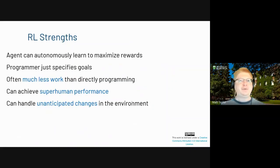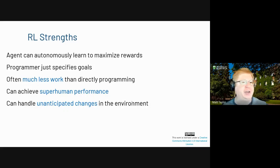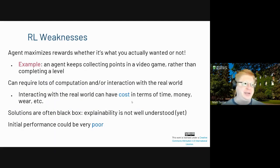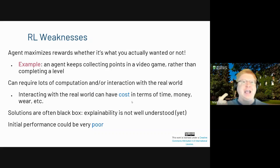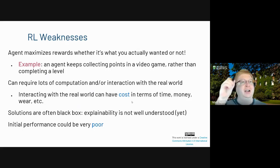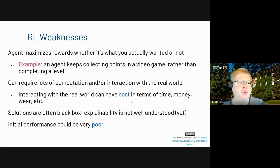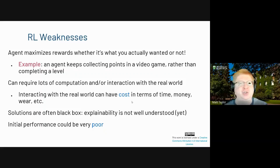Summing up: reinforcement learning can help an agent learn to maximize rewards — the programmer just has to specify goals. There's often much less work than hand-coding, agents can often outperform humans, and you can handle unanticipated changes. However, there are weaknesses: your agent will maximize your reward whether or not that's what you want, whether it's ethical, safe, or legal — it just maximizes the reward. For instance, if you're trying to beat a video game and tell the agent to collect points, it might find a reward cycle and never finish. It can also require lots of computation or real-world interaction time, and if you have an RL robot learning from scratch, you may have to replace batteries and repair parts.